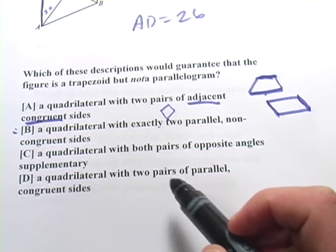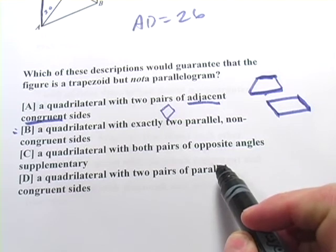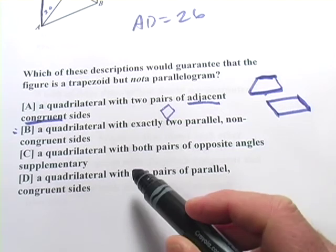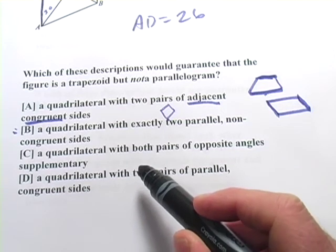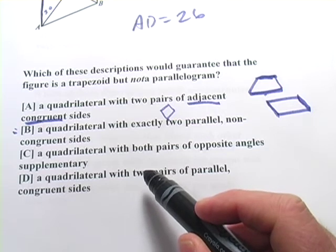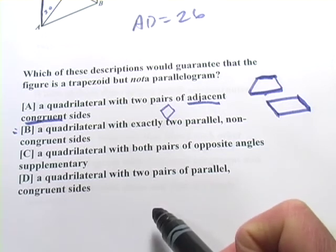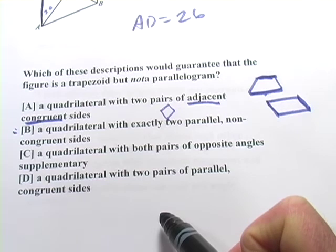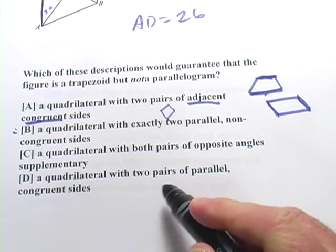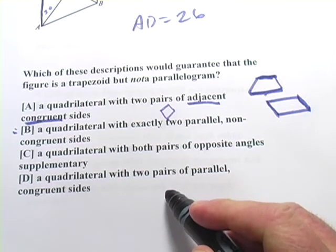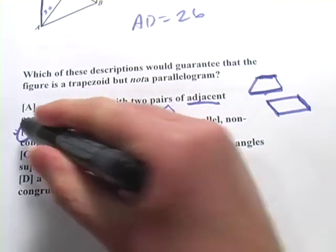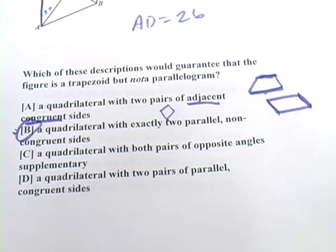But let's check these others. C says a quadrilateral with both pairs of opposite angles supplementary. Well, that could happen in something other than a trapezoid. Or D, a quadrilateral with two pairs of parallel congruent sides. And that absolutely is a parallelogram. So, looks like B is going to be our answer there. Let's try a couple more of these.